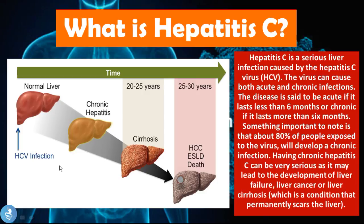In my picture on the left, we have the normal liver and this is when the HCV infection can be acquired. This image basically shows the progression of the viral infection. From the normal liver, we will have an acute phase of Hepatitis C, which will then go to chronic Hepatitis and liver cirrhosis, and then it can lead to hepatocellular carcinoma, end-stage liver disease, and also death. There is quite some time — about 20 to 25 years before extreme cirrhosis sets in, and then 25 to 30 years after the initial infection in which we could have end-stage liver disease or hepatocellular carcinoma.